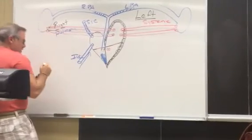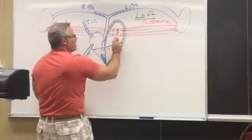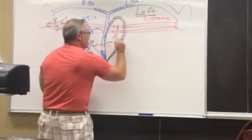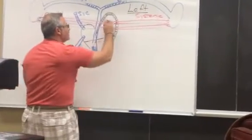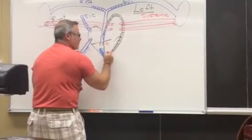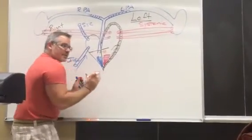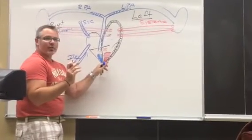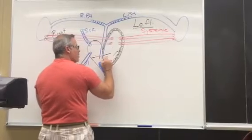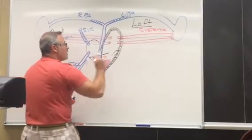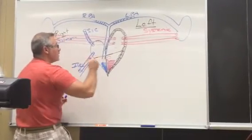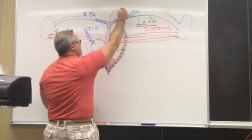That oxygenated blood — shown in red — fills the left atrium. As pressure builds in the left atrium, the bicuspid valve is forced open and blood passively moves down into the left ventricle. As it continues to build up, pressure increases and the left ventricle contracts inferior to superior. This forces the bicuspid or mitral valve shut and forces the aortic semilunar valve open.